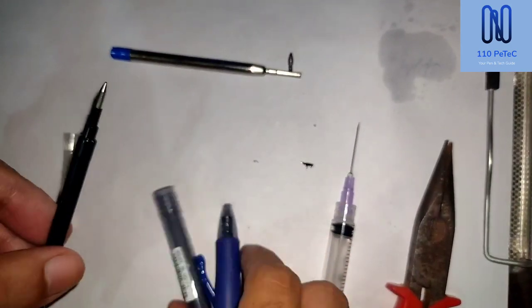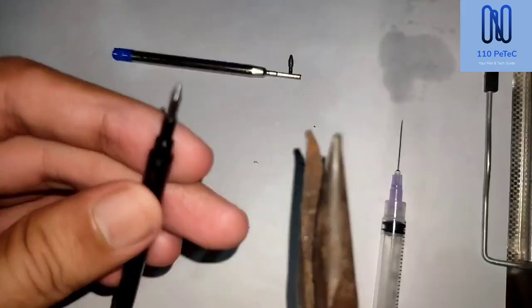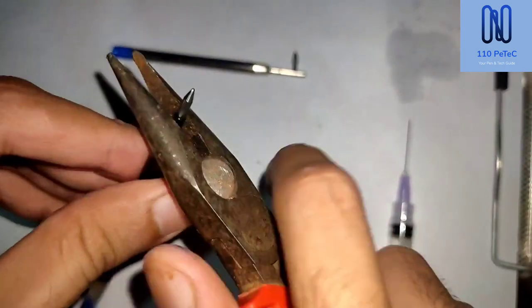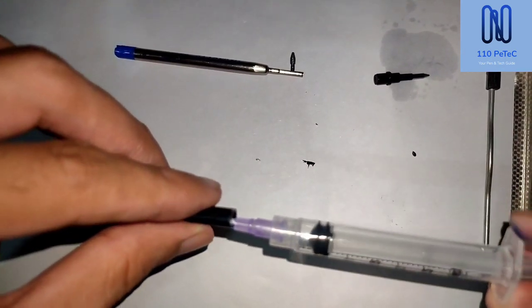This is the first version. I took Pilot G2, open it up from front. Keep in mind, please try to open it from front, and with the plier I removed that one because it will help you save your ink.